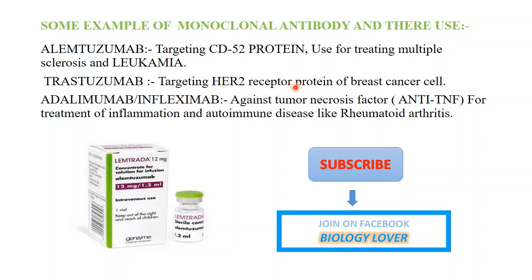You can see here an image of the company that produced a monoclonal antibody — this is one type of alemtuzumab, a monoclonal antibody produced by the company. Different companies now produce different types of monoclonal antibodies used in different ways. Thank you.